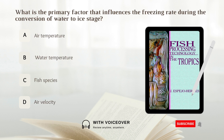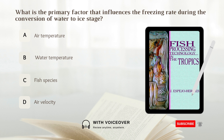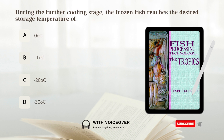What is the primary factor that influences the freezing rate during the conversion of water to ice stage? A. Air temperature. B. Water temperature. C. Fish species. D. Air velocity. Answer: D. Air velocity. During the further cooling stage, the frozen fish reaches the desired storage temperature of negative 30 degrees Celsius.